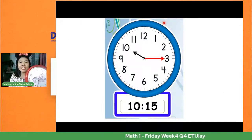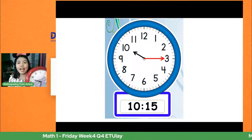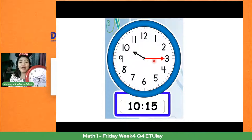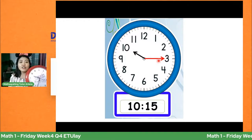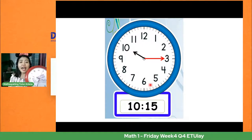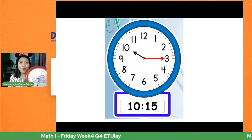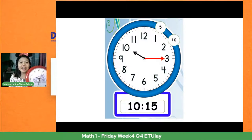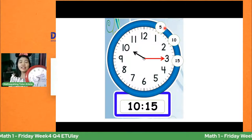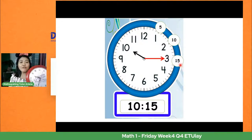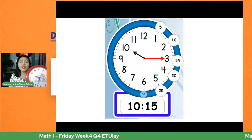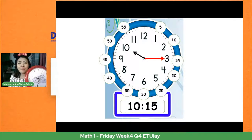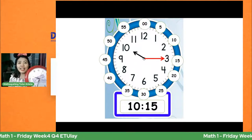Kagaya nito, ang maliit na kamay ay nasa number 10 at ang mahabang kamay ay nasa number 3. Anong basa natin dyan? Babasahin natin siya sa oras: ito ay 10. At sa minuto naman, bibilang tayo — 5 minutes, 10, 15, 20, 25, 30. Pagdating sa number 12 ng mahabang kamay, ito ay tatawagin nating o'clock. Kaya ang basa natin ay 10:15.